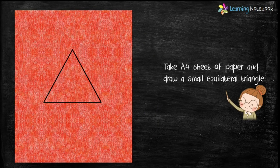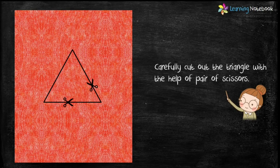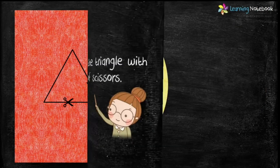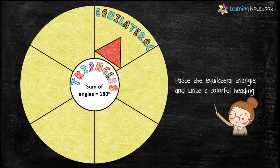Students, you can also choose to do the construction of an equilateral triangle using a compass and a ruler. Then carefully cut out this triangle using a pair of scissors. Paste this equilateral triangle and write a colorful heading along with its property — that is, an equilateral triangle has three equal sides.